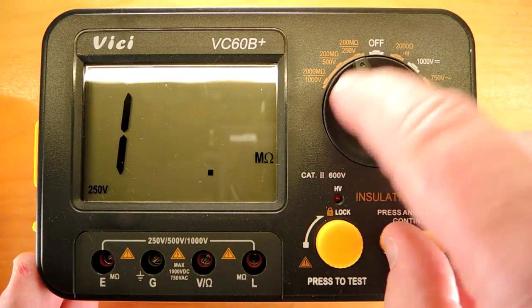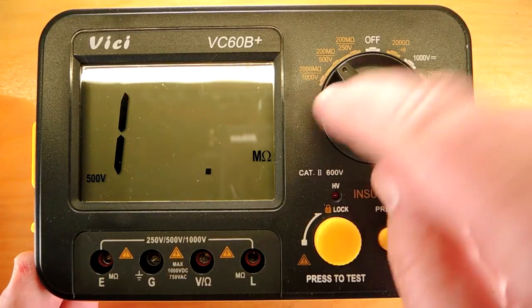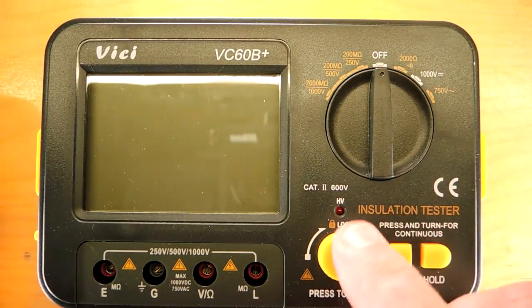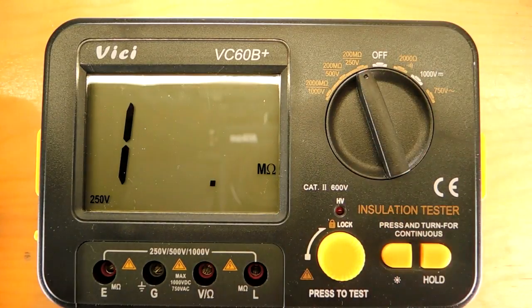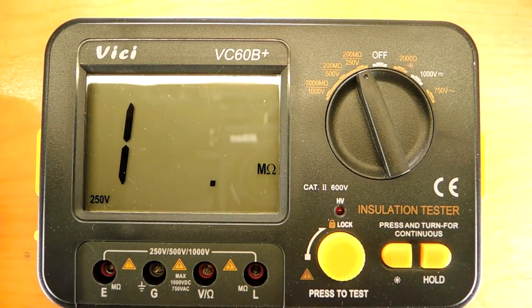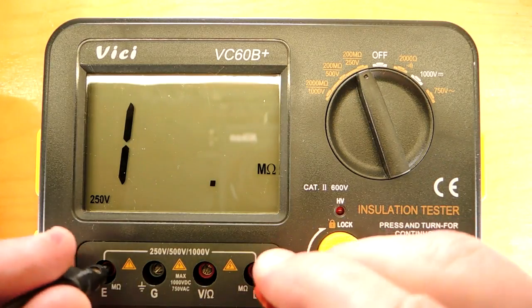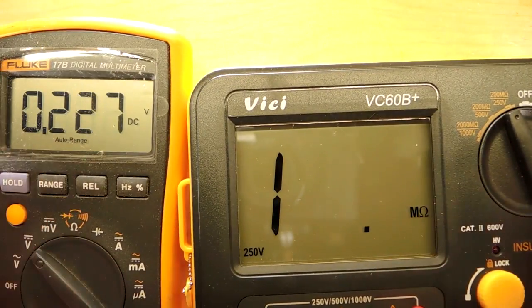There's a 250 volt, 200 mega-ohm range, a 500 volt, 200 mega-ohm range, and a 2,000 mega-ohm, 1,000 volt range. What this is doing is it'll actually generate a voltage at, say, 250 volts, and then it'll measure the resistance of the circuit. I'll get into why that's important. But for now, let's just connect it up to this Fluke meter and put it into voltage mode.